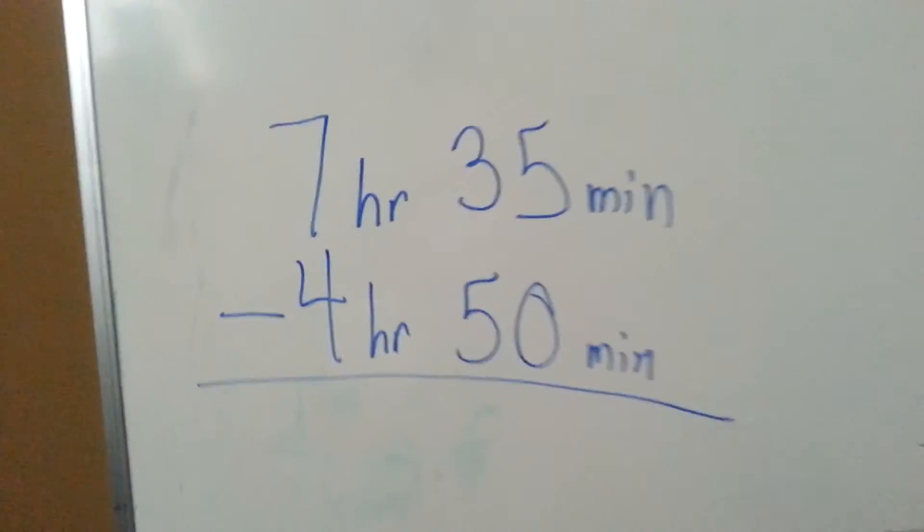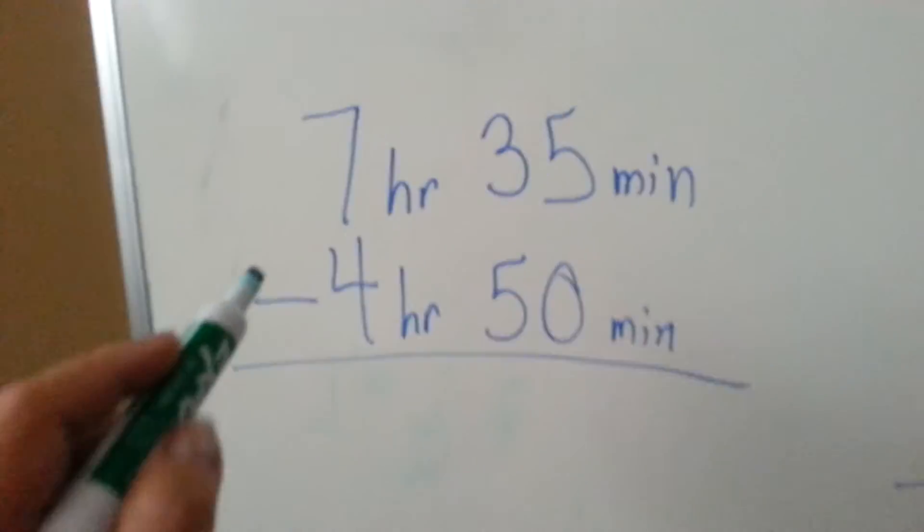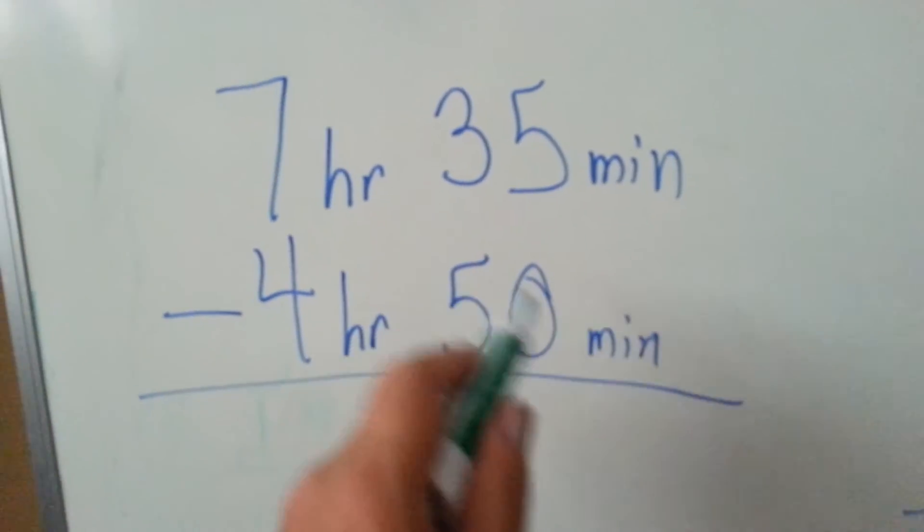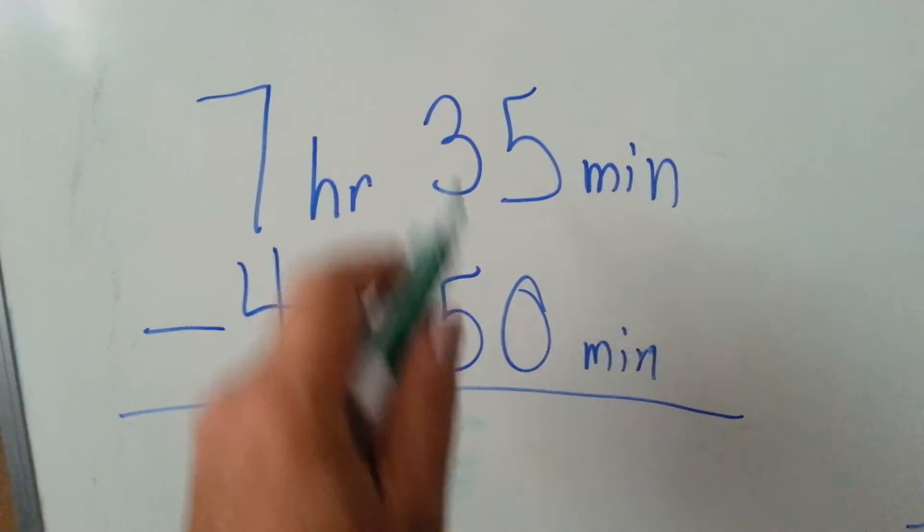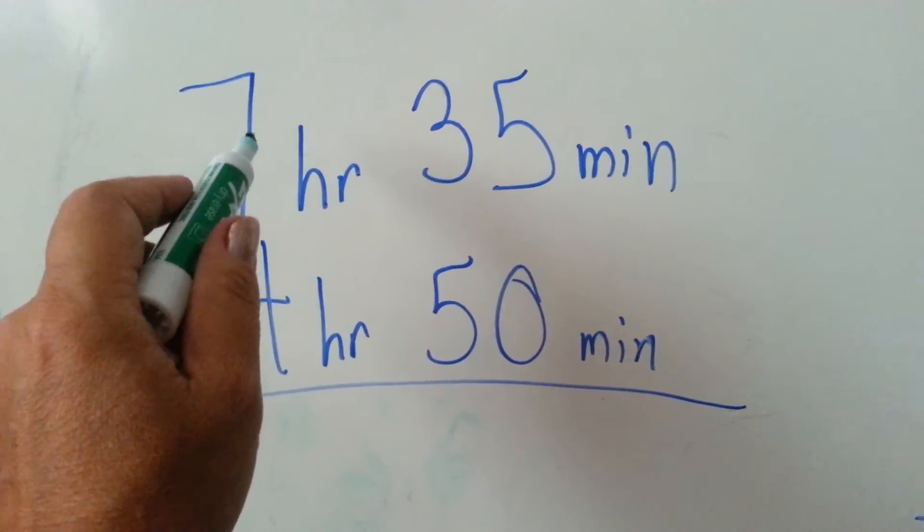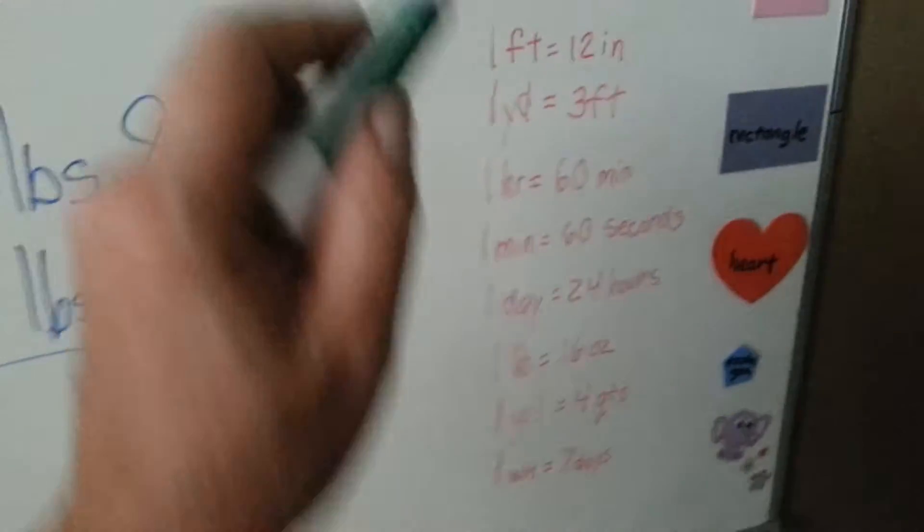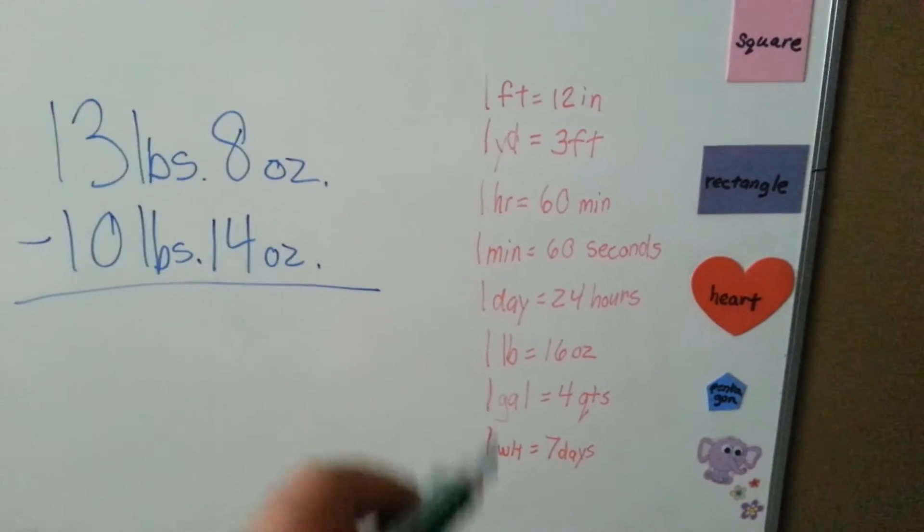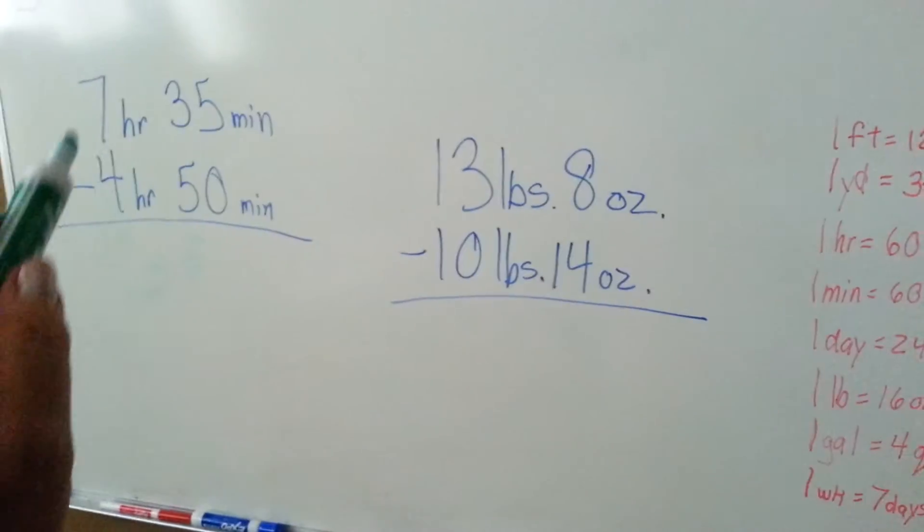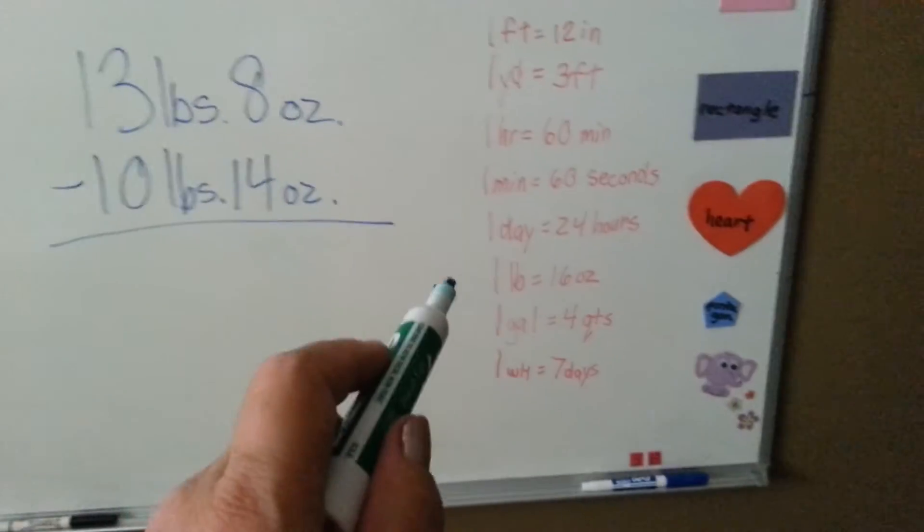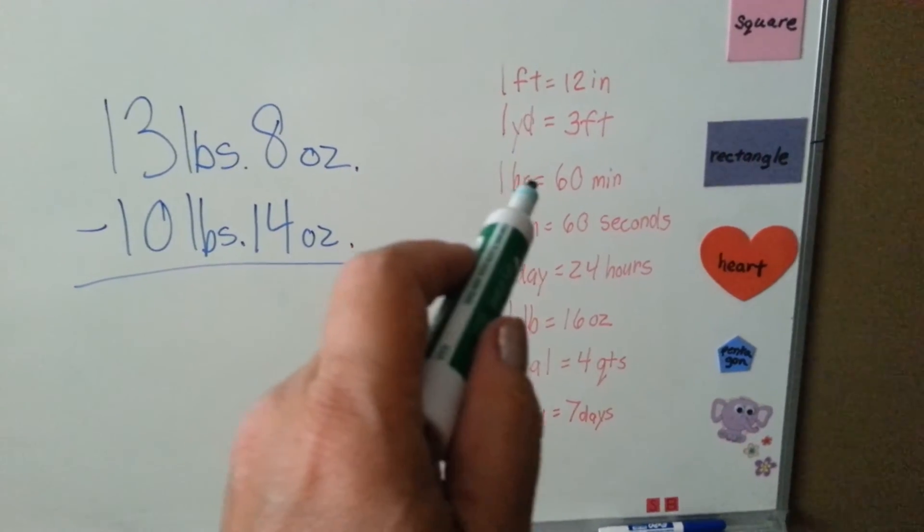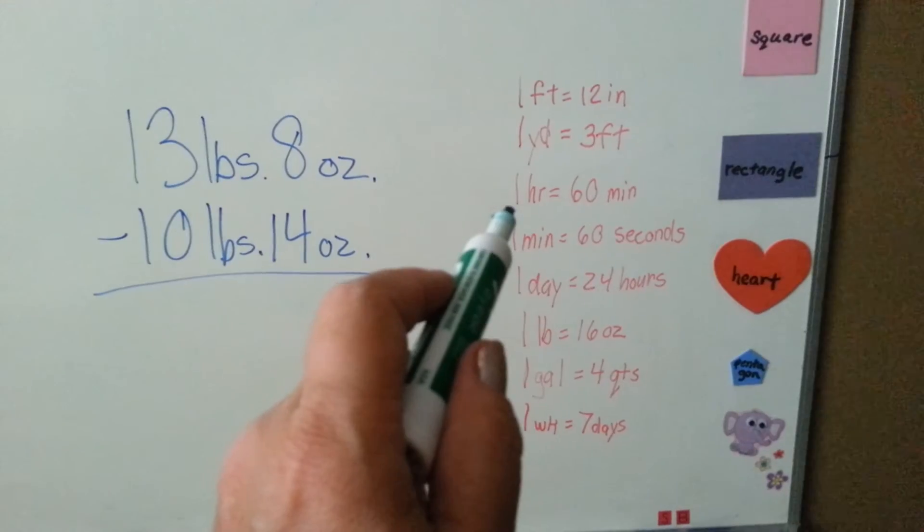The first thing we're going to do when we see 35 minutes take away 50 minutes is say you can't do that and we need to borrow some minutes from these seven hours. Having a conversion chart from your math book or the internet is going to help you when you do measurements. In this problem, we need hours and minutes, and we know that one hour is 60 minutes according to this chart.